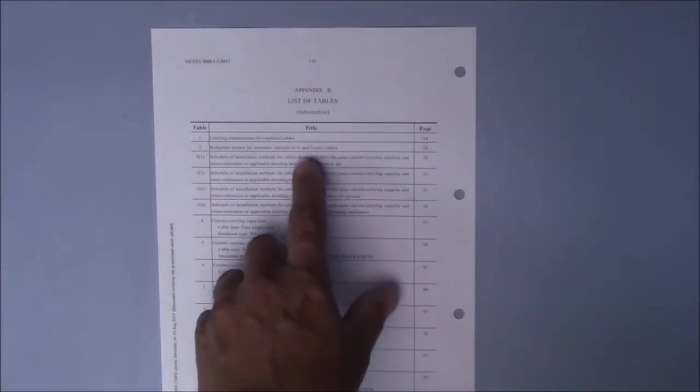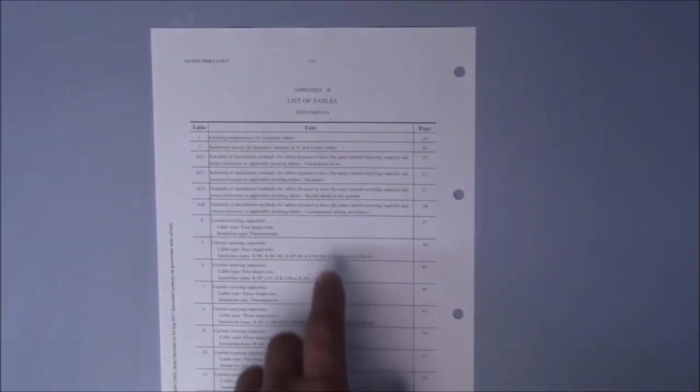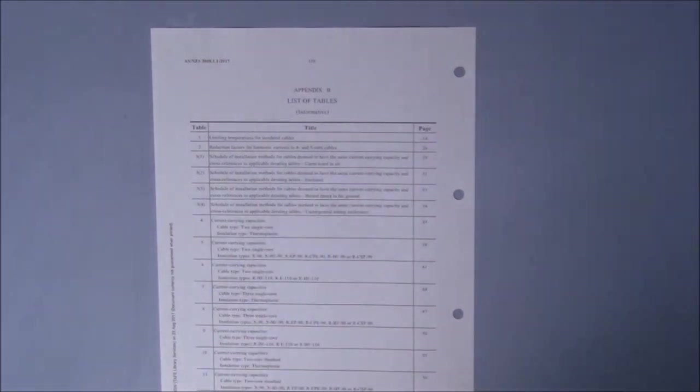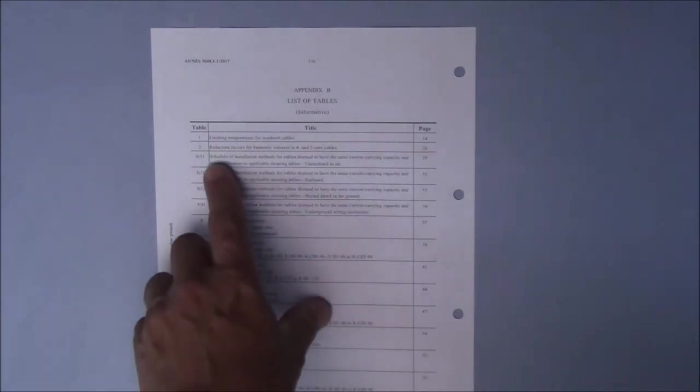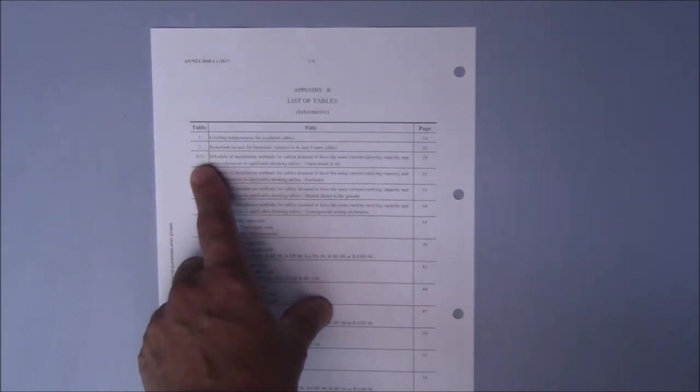This particular one is above ground and it's unenclosed, as in it's not in a conduit or a ducting or trunking arrangement. Our appropriate table to start with will be table 3-1.